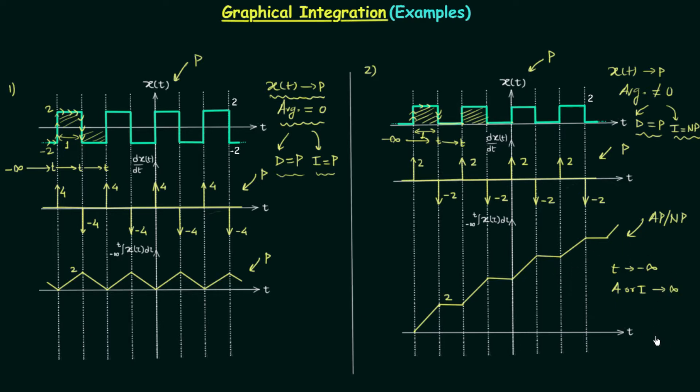I hope this point is clear. These two examples were taken to explain this concept. In the coming presentations we will discuss system properties — basic system properties like causal, noncausal, static, dynamic, time variant, time invariant, etc. We are still left with convolution but it is good to study convolution after discussing LTI systems. That's all for this lecture, see you in the next one.